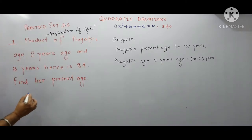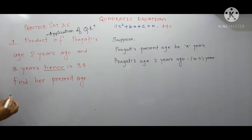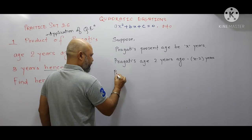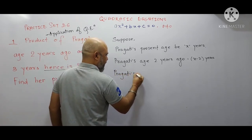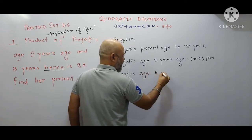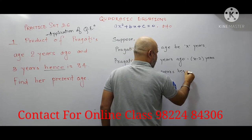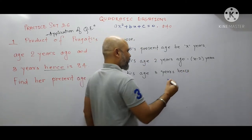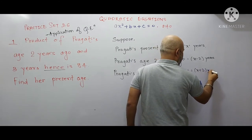Similarly, three years hence — hence means after three years. So Prakriti's age three years hence will be x plus 3 years.